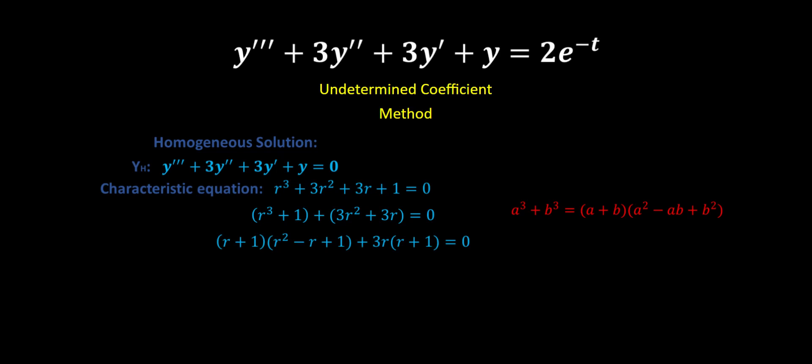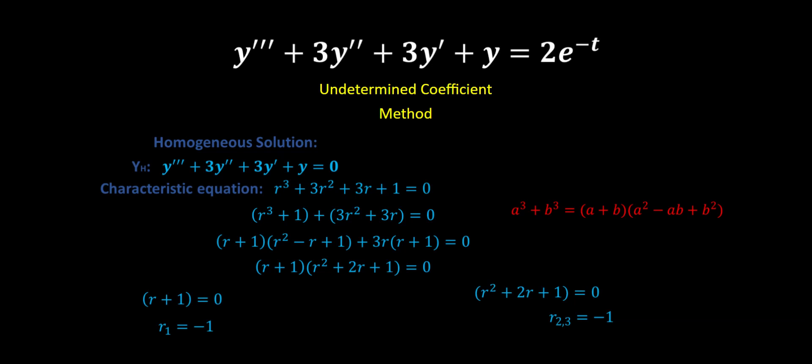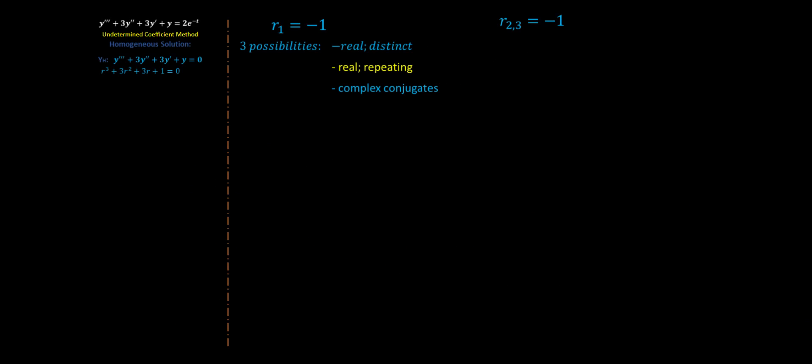Factoring and simplifying allows me to get to a form which is much easier to solve, and I'm able to find all three of our roots: r1, r2, and r3, which are all equal to negative 1. From homogeneous equations, we know when we arrive at our roots there are three possibilities: real and distinct, real and repeating, or complex conjugate roots. In our case, we arrive at the real and repeating scenario — all three roots are real and repeating.